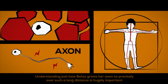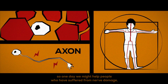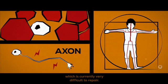Understanding just how Betsy grows her axon so precisely over such a long distance is hugely important, so one day we might help people who have suffered from nerve damage which is currently very difficult to repair.